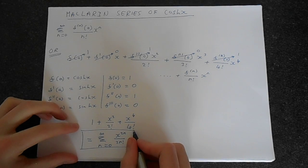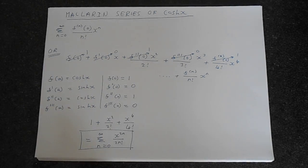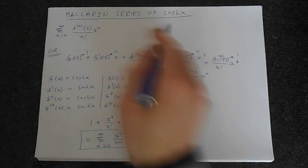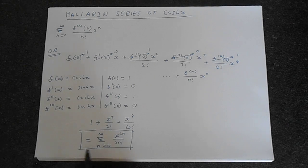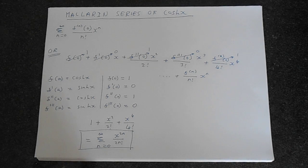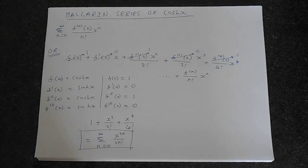Hence, this is the sigma notation version of the Maclaurin series of cosh x. And you can get as many terms as you like by continually expanding this through various n's. Hopefully this video's been helpful to you. Thank you.